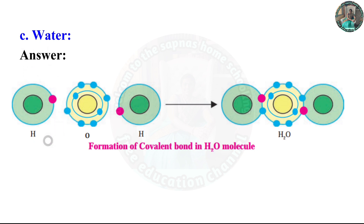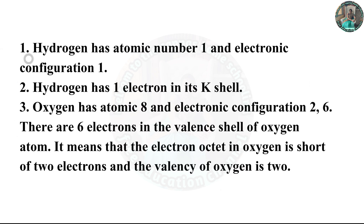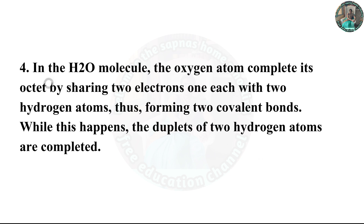Water, H₂O. Water has hydrogen and oxygen — two hydrogen atoms and one oxygen atom. Hydrogen has atomic number 1 and electronic configuration 1, meaning it has 1 electron in its K shell. Oxygen has atomic number 8 and electronic configuration 2, 6; there are 6 electrons in the valency shell of oxygen, so its octet is short of 2 electrons and the valency of oxygen is 2. In the H₂O molecule, the oxygen atom completes its octet by sharing 2 electrons, one each with the 2 hydrogen atoms, forming 2 covalent bonds, while the duplets of the 2 hydrogen atoms are completed.